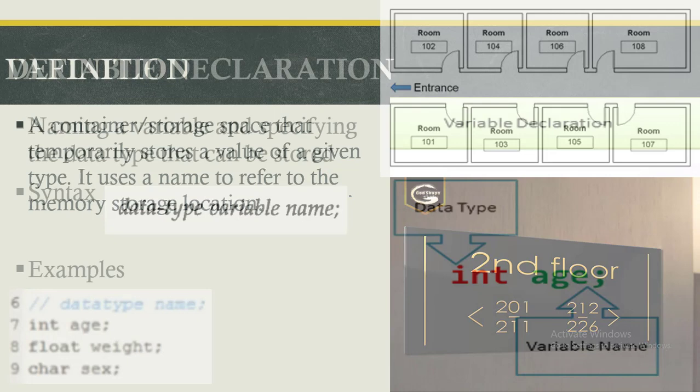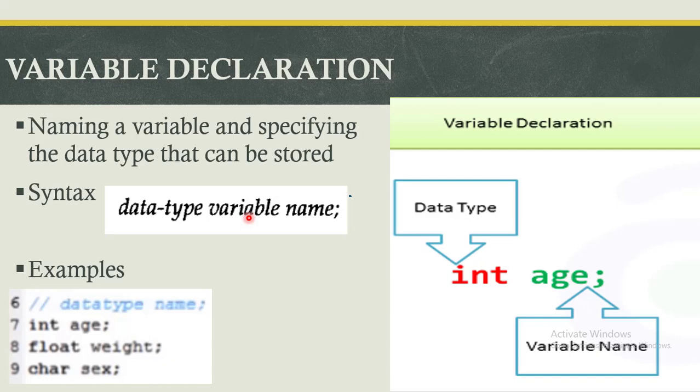Next is how do we declare a variable? Declaration of a variable implies the process of naming a variable as well as specifying the data type or the type of value that can be stored in that particular storage location. What's the syntax? We always begin with the data type and we follow it with a variable name.